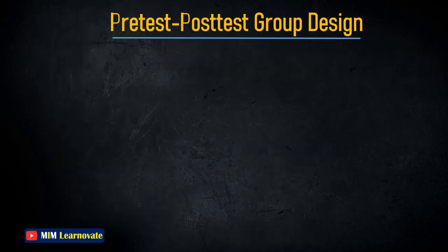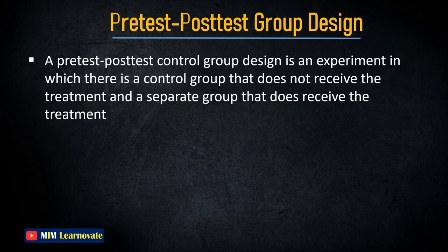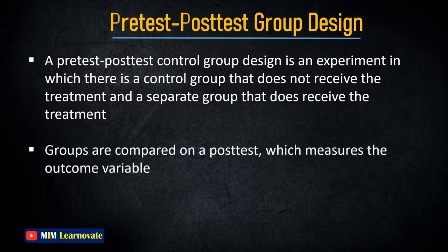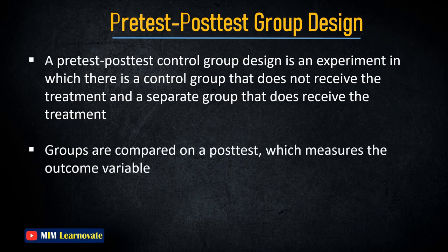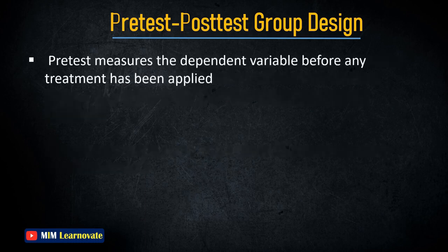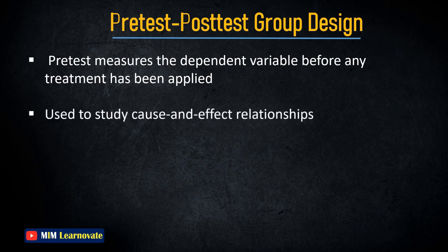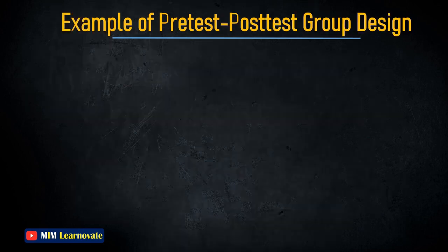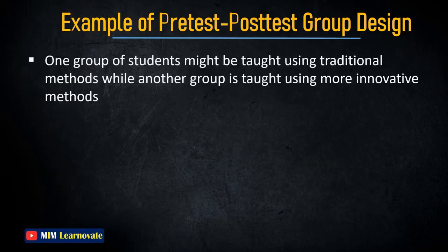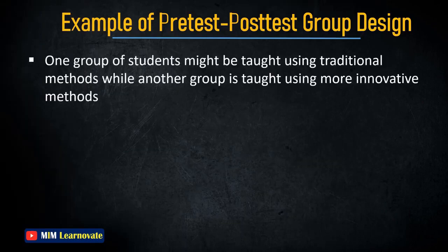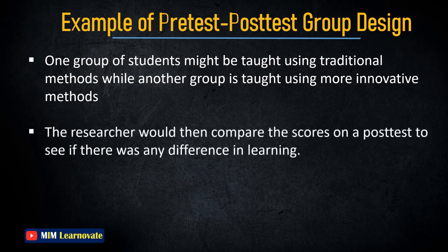Pre-test Post-test Control Group Design: This is an experiment in which there is a control group that does not receive the treatment and a separate group that does. The groups are compared on the post-test, which measures the outcome variable. The pre-test measures the dependent variable before any treatment has been applied, and this design is used to study cause-and-effect relationships. For example, one group of students might be taught using traditional methods while another is taught using more innovative methods, and the researcher compares post-test scores.